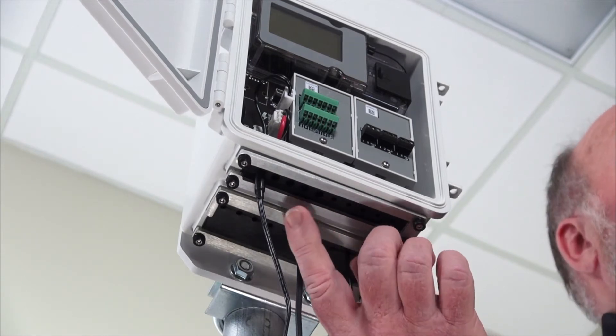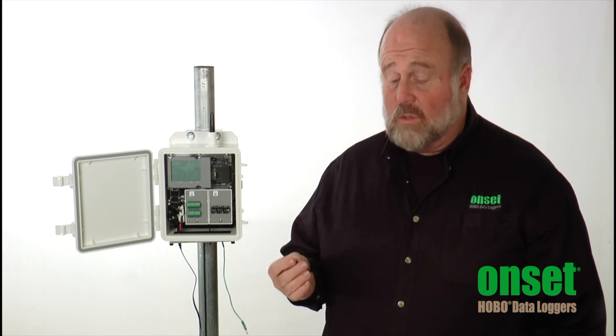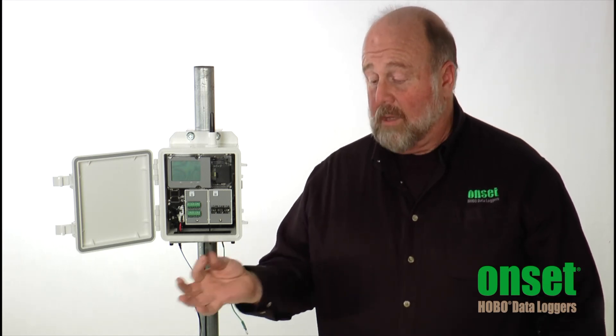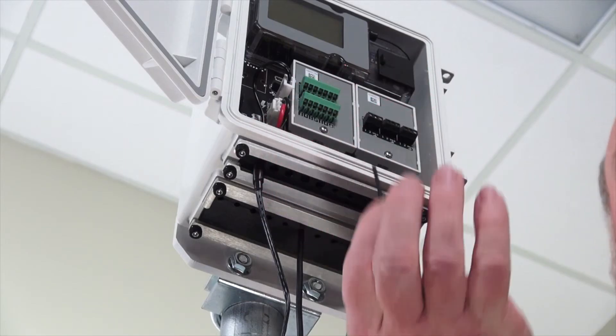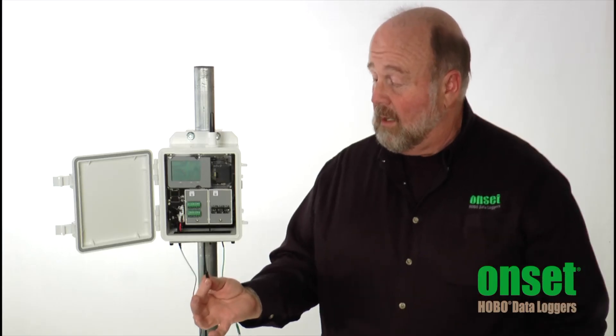What you want to do with the existing or additional penetrations is use the enclosed plug assemblies, which this is one of them, and install them with the narrow end of the plug inwards.